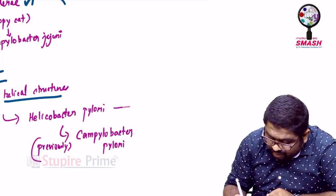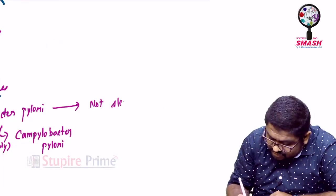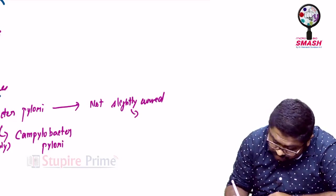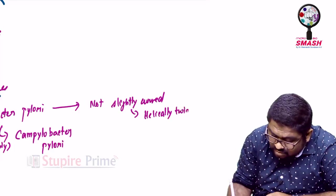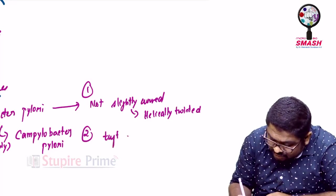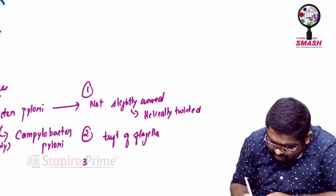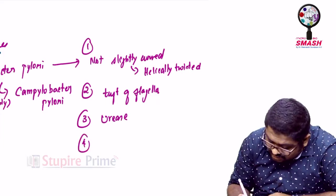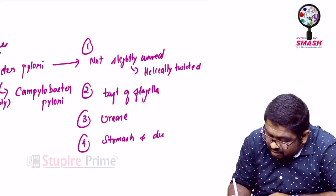Point number one, Helicobacter pylori is not slightly curved. It is helically twisted. Point number two, it has tuft of flagella at one end. It can produce urease. It can attack stomach and duodenum.